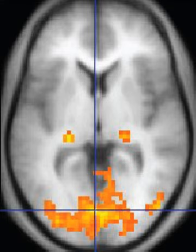An MRI sequence is a particular setting of radiofrequency pulses and gradients, resulting in a particular image appearance. The T1 and T2 weighting can also be described as MRI sequences.